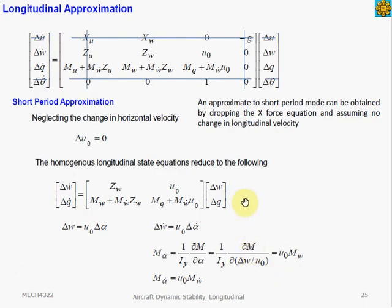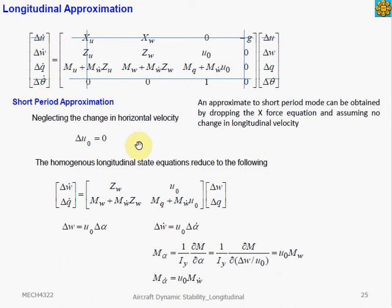Now let's derive the two-degree-of-freedom short period approximation. We start by taking a look at the same longitudinal equation of motion. For short period mode, we have discussed that this motion occurs at fairly constant airspeed, but there are variations in the angle of attack and the pitch attitude. To approximate the short period mode, we assume that the airspeed is constant, therefore the change in airspeed is zero, so we drop that term in the equation. We also drop the x-force equation because this force is negligible if the airspeed is constant. By that, we can approximate the short period mode using only the z-force and the pitching moment equations extracted from the three-degree-of-freedom longitudinal equation.